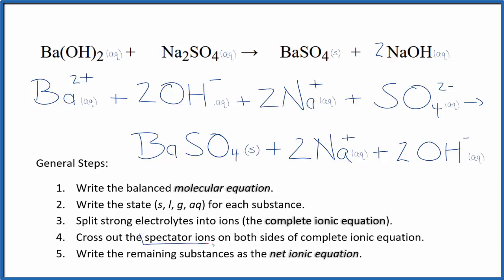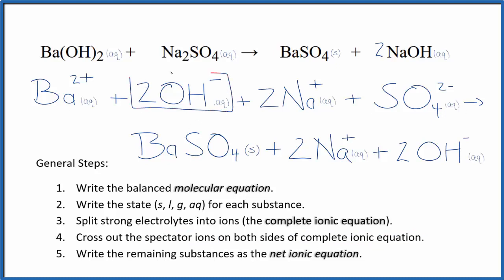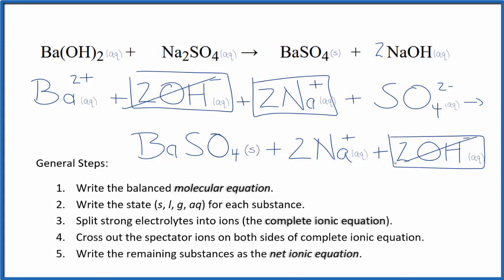Now we can cross out spectator ions — they're on both sides of the complete ionic equation. In the reactants we have two hydroxide ions, and we also have them in the products. These are spectator ions, so we can cross these out. Similarly, two sodium ions in the reactants and two sodium ions in the products — spectator ions, cross them out.